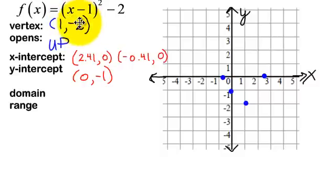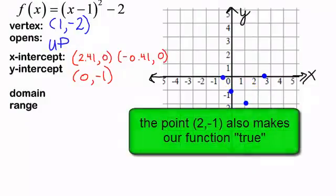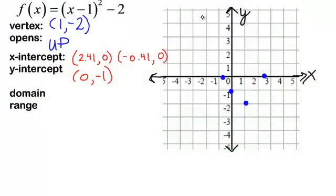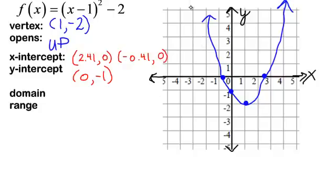If you plug in 2 for x, you get 2 minus 1, that would be 1 squared minus 2 — and it would be negative 1. So I am now ready to draw my parabola. Now for the domain and the range — for the domain, my parabola goes on and on to the left and to the right, so my domain is negative infinity to positive infinity.